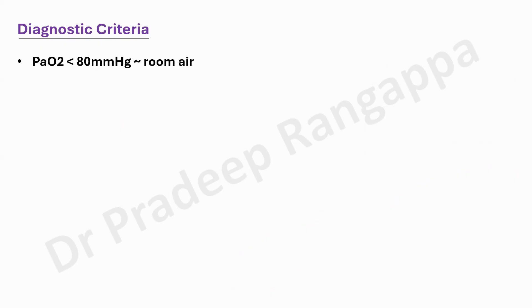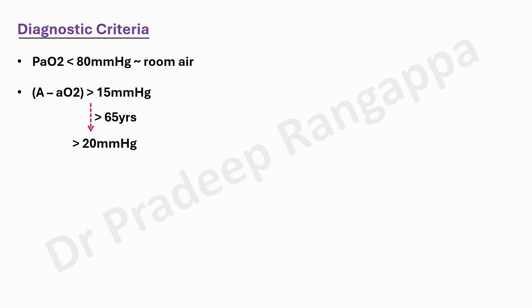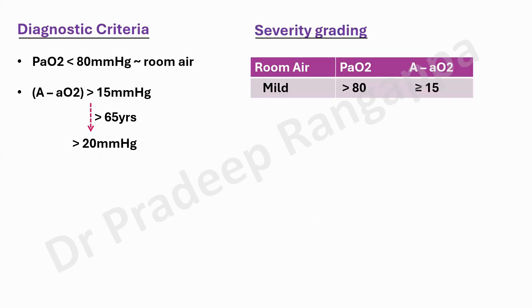What are the diagnostic criteria? PaO2 less than 80 at room air in patients with underlying liver disease, or an alveolar-arterial oxygen gradient more than 15 mmHg — one can consider it as a possibility of hepatopulmonary syndrome. In patients more than 65 years, the AA gradient should be more than 20 mmHg. This is the baseline criterion to keep in mind.